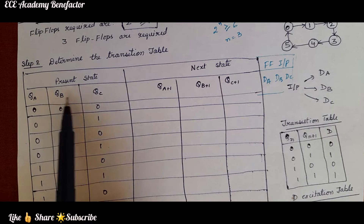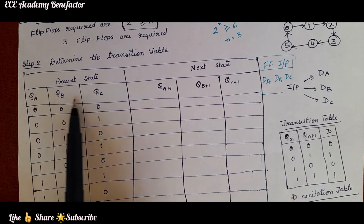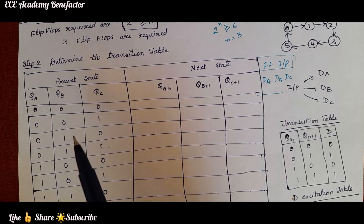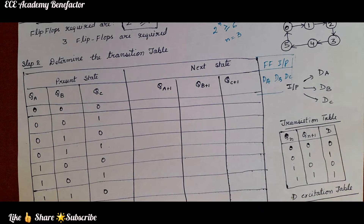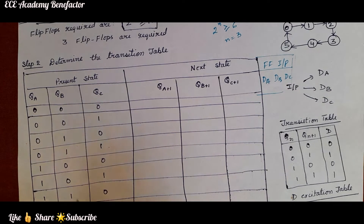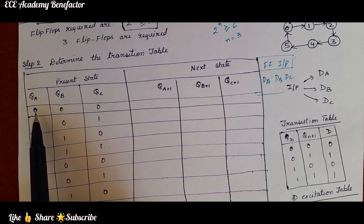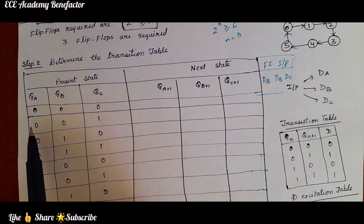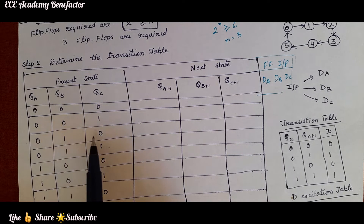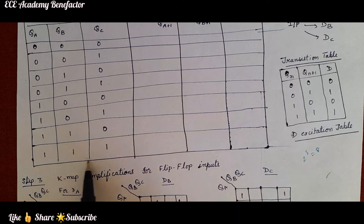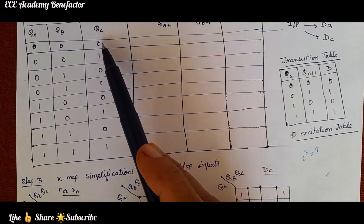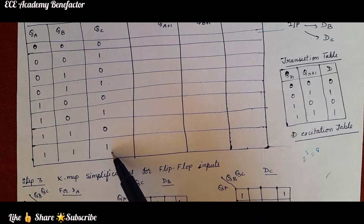With 3 flip-flops and 3 outputs QA, QB, QC, when we have 3 bits we can have a total of 8 combinations — 2 to the power 3 — starting from triple 0 (000) all the way to triple 1 (111). We have written all the binary combinations from 000 to 111.